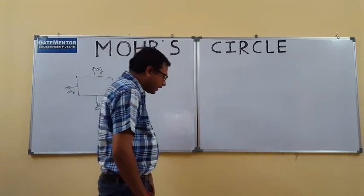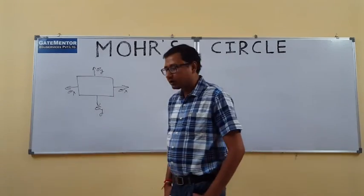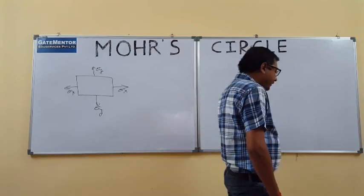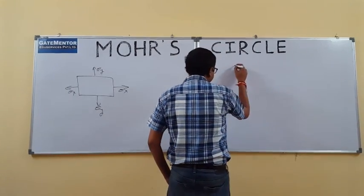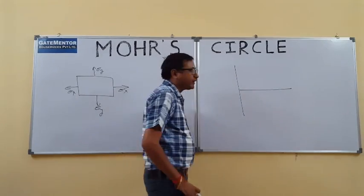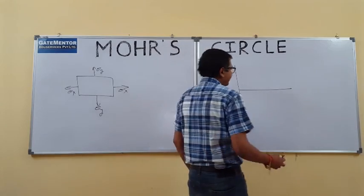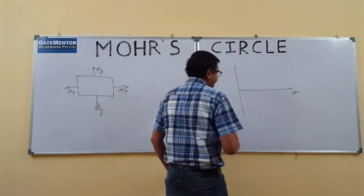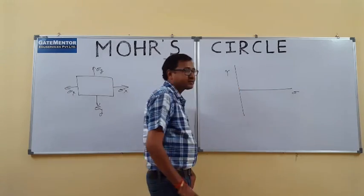In this arrangement, if we have to draw a Mohr's circle, we need to draw a coordinate system. In the case of Mohr's circle, on the x-coordinate we represent the normal stress, and on the y-coordinate we represent the shear stress.